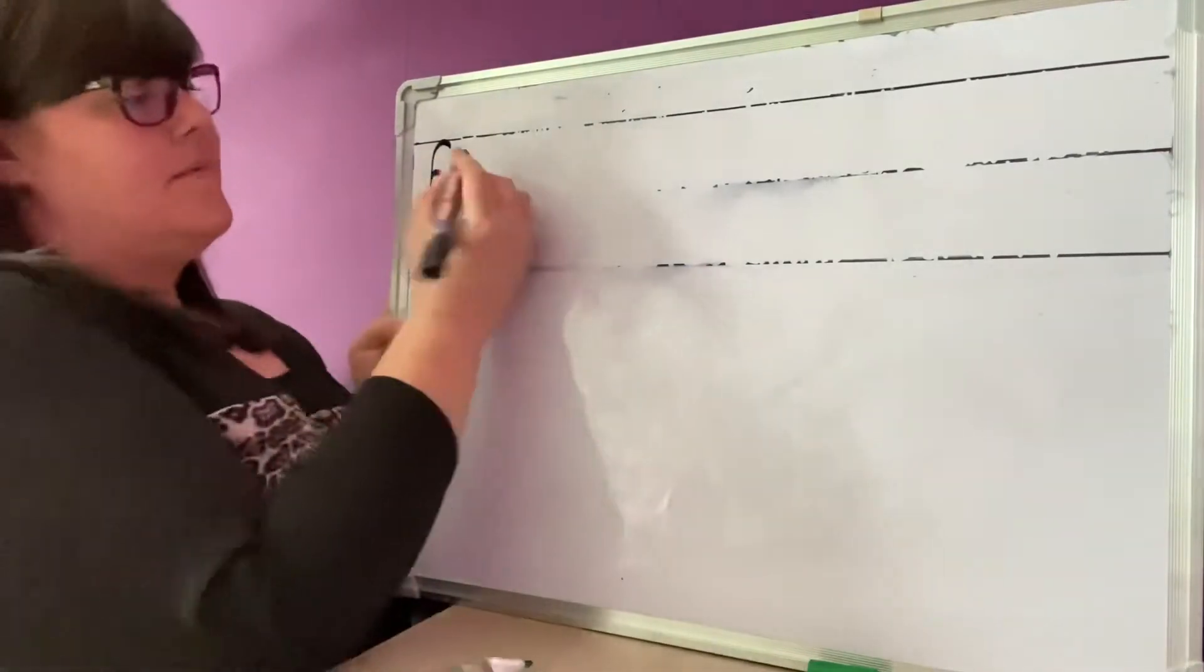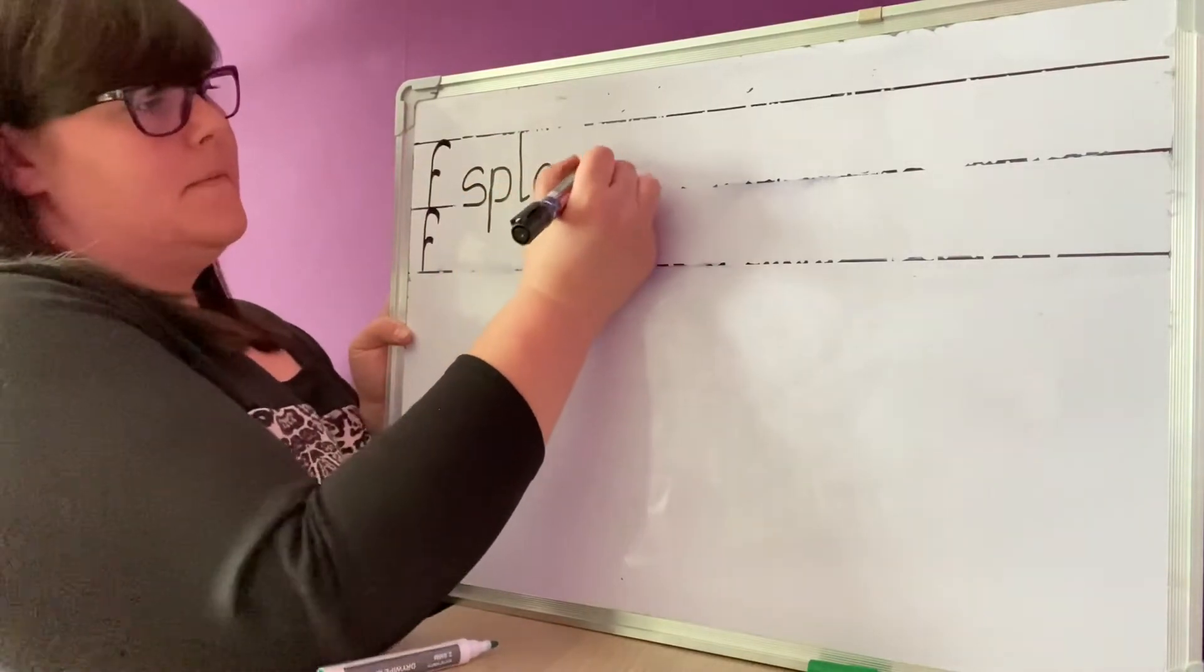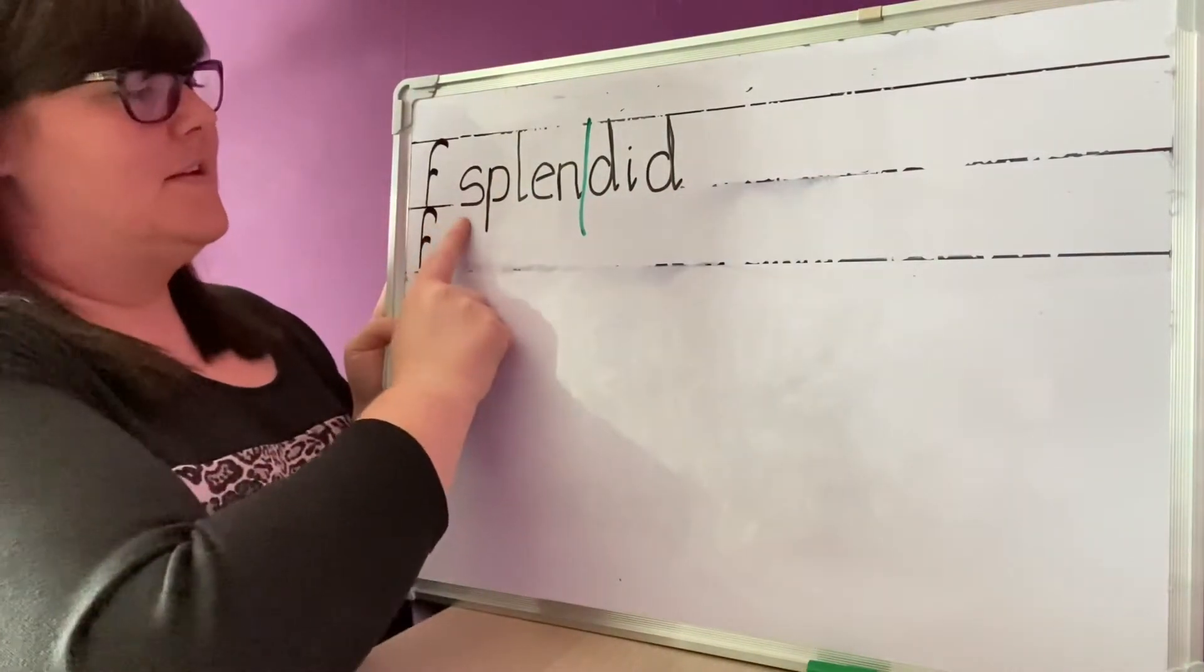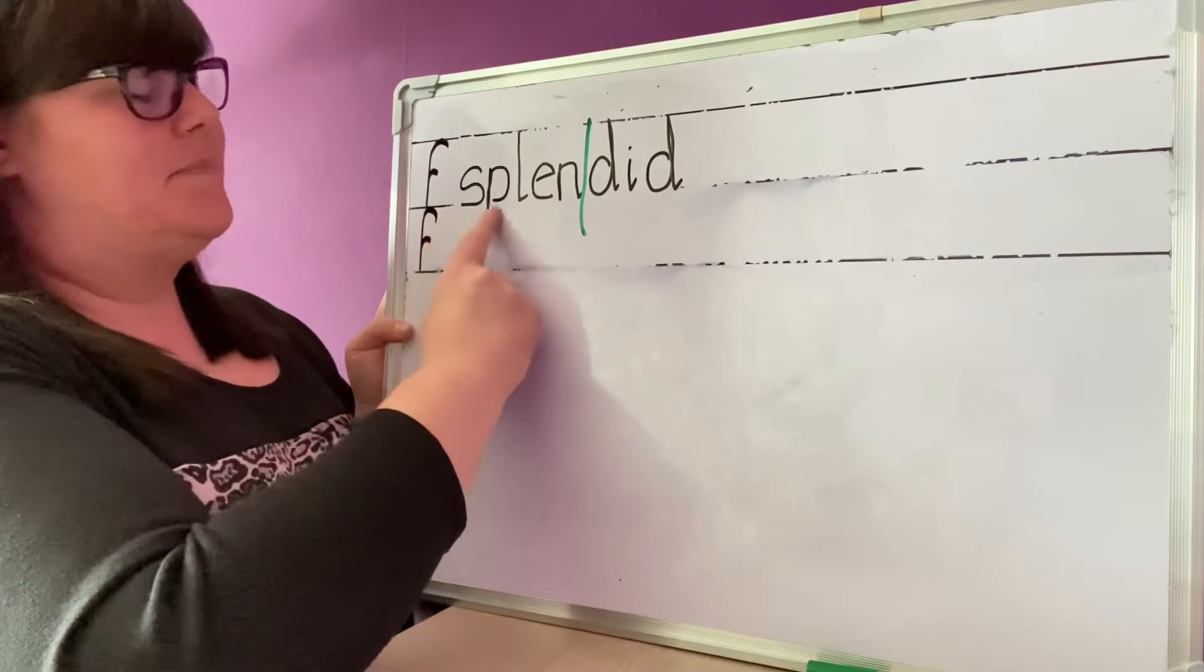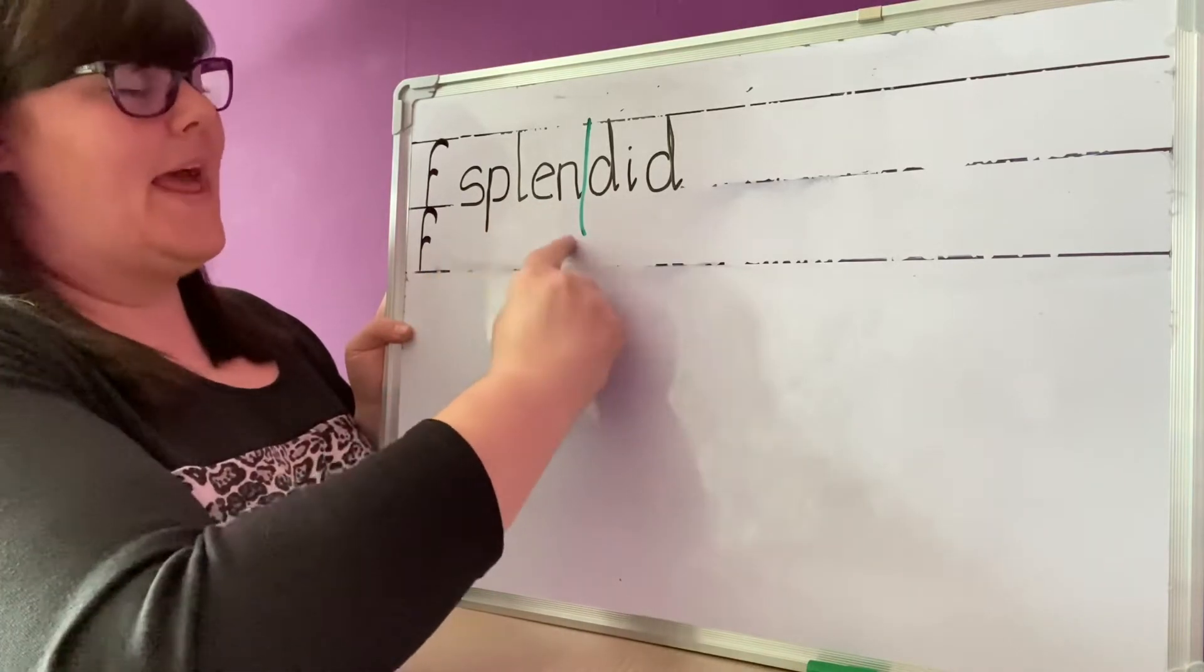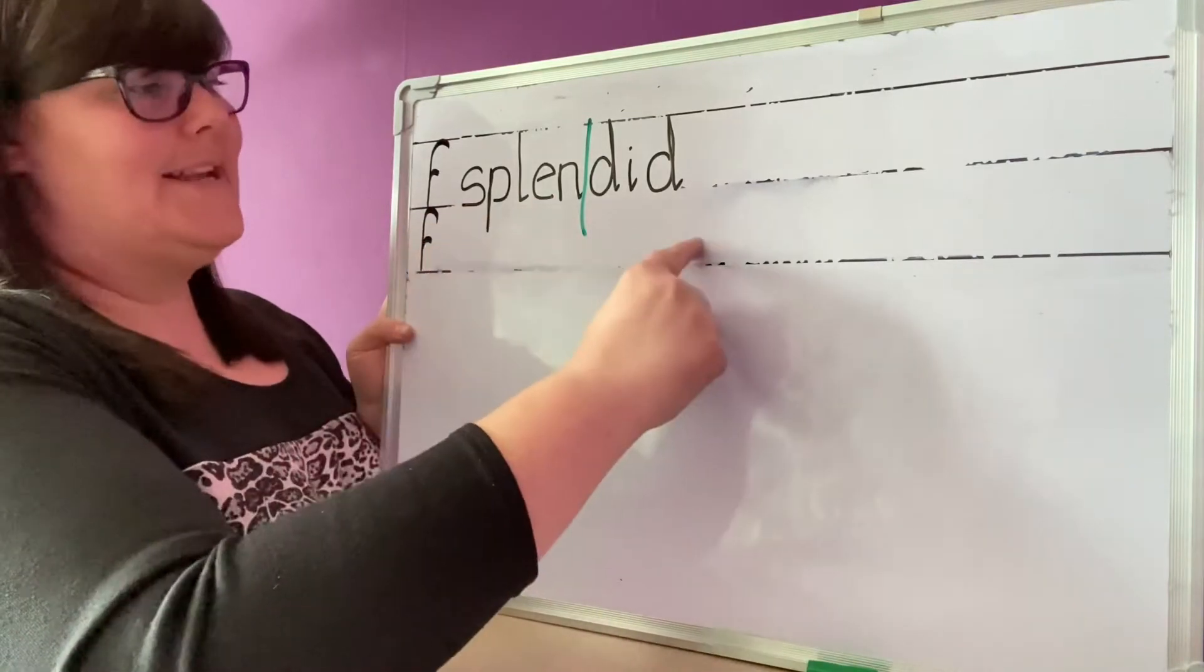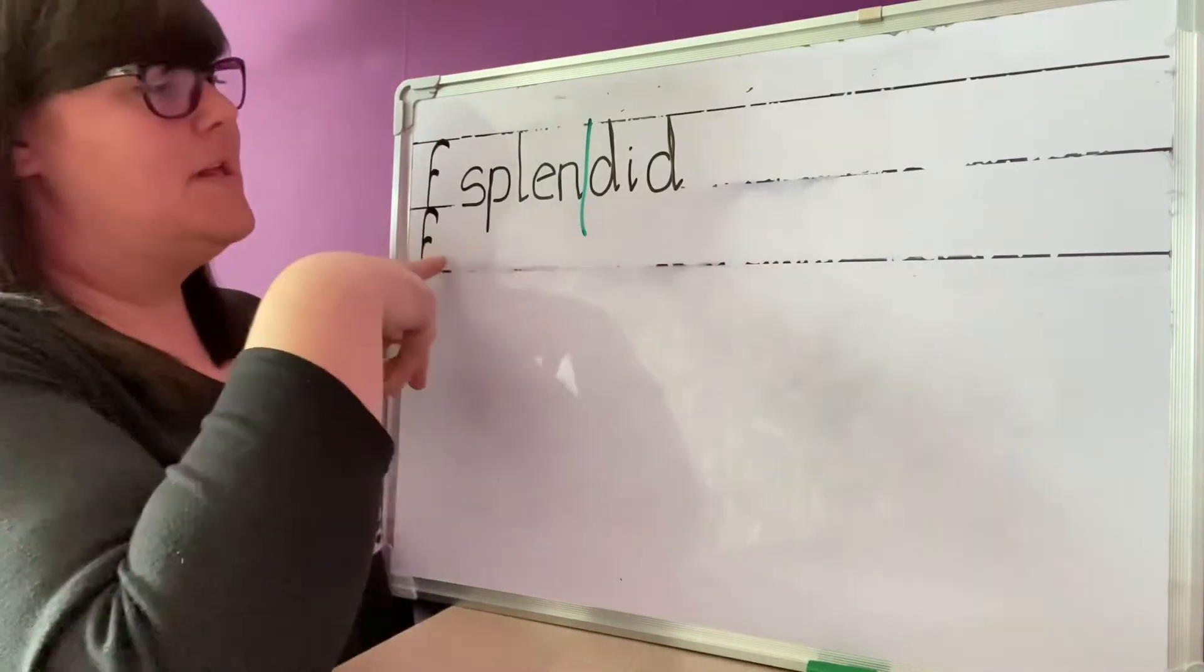Last word to read then. Okay, say the sounds, read the syllable. Splen, splen, splen, splen, splen. Did. Did. Splen, did. Splendid. Let's say the word again. Are you ready? Splendid. Once more. Splendid.